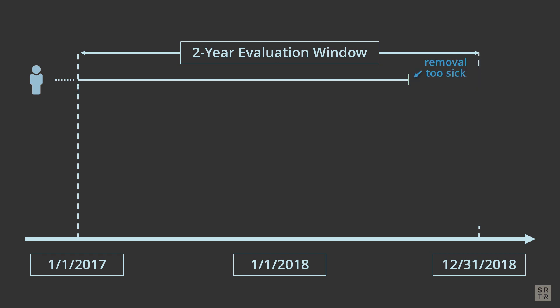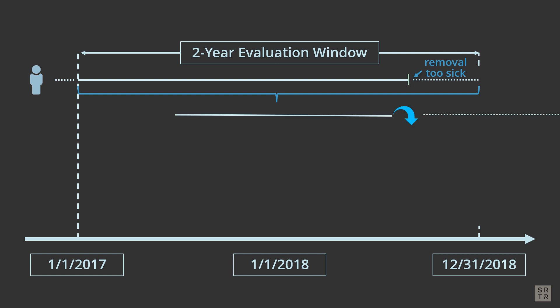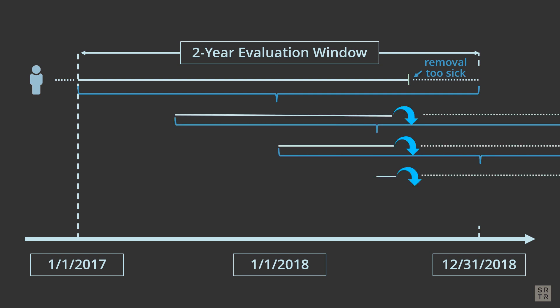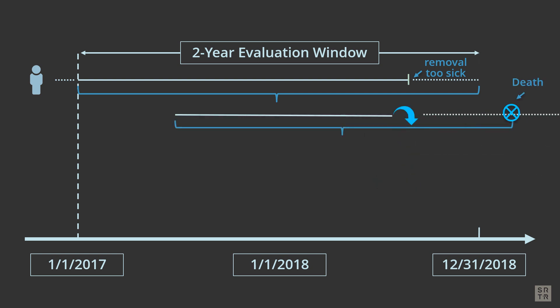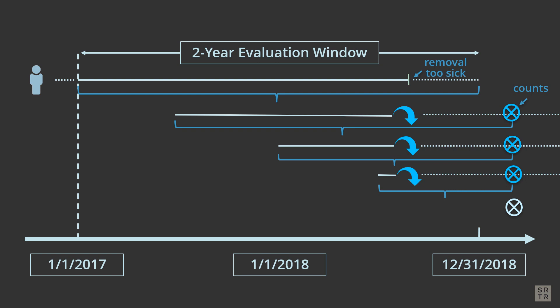If the candidate was removed for being too sick, since we continue to follow them until the end of their allotted time period, the length we follow them can also change. In the first reporting period, the candidate was only followed until the end of the period, but in the next and consecutive reports, the follow-up time extends. Once the observation period rolls beyond when the candidate was removed, they no longer contribute to the data. If the candidate dies within the follow-up time, the death will count. Note that in the first reporting period the death had not occurred yet and therefore was not counted, but it did occur in the next observation period while the candidate was being followed, so the death counts in that report and the next two reports. Once the observation period rolls beyond when the candidate was removed, they no longer contribute to the data and the death no longer counts.